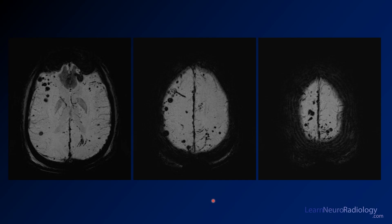The answer to that question is kind of given away here. This is susceptibility-weighted imaging, which is a very heavy T2-weighted imaging that doesn't have refocusing. So you're seeing areas where the local magnetic field is distorted, and here you see some abnormalities.